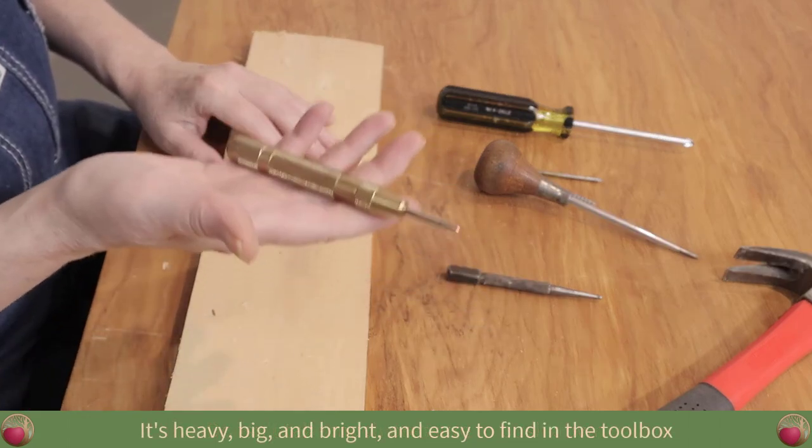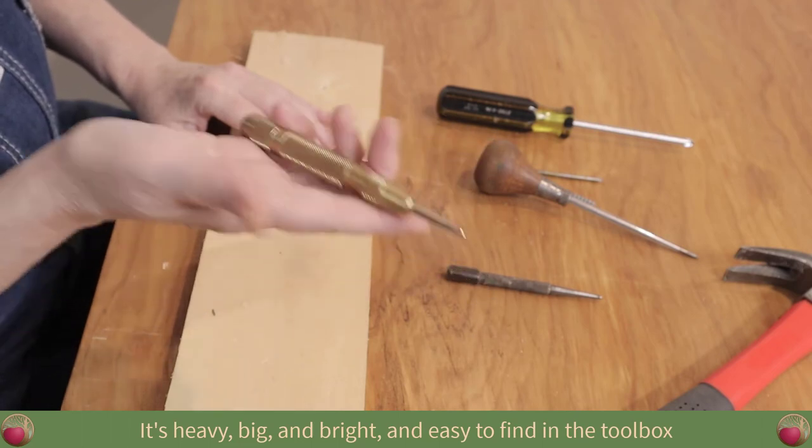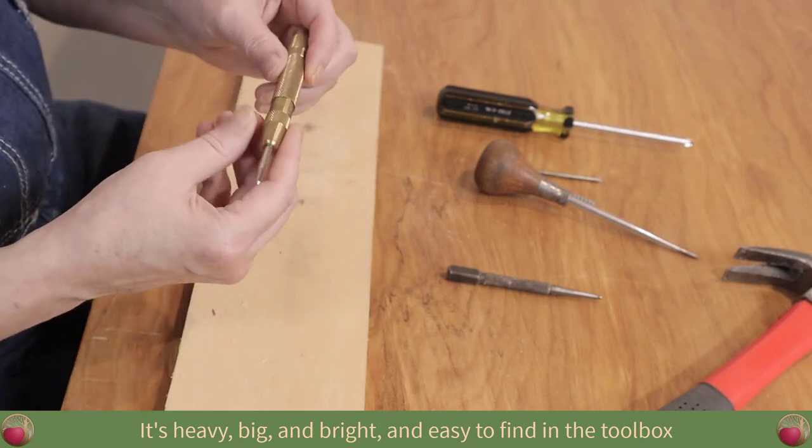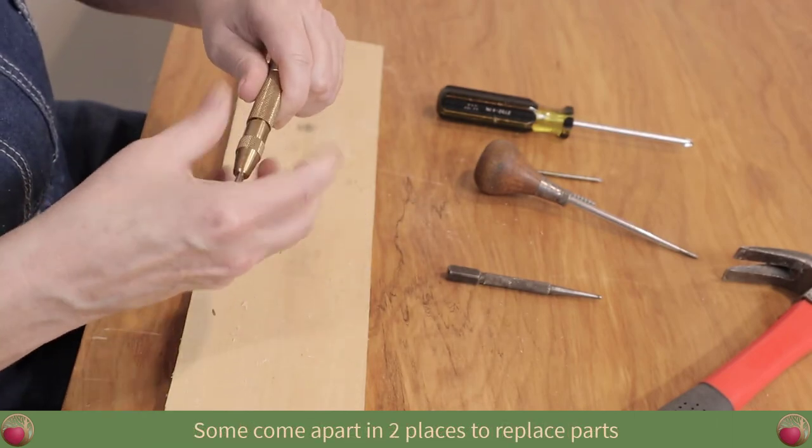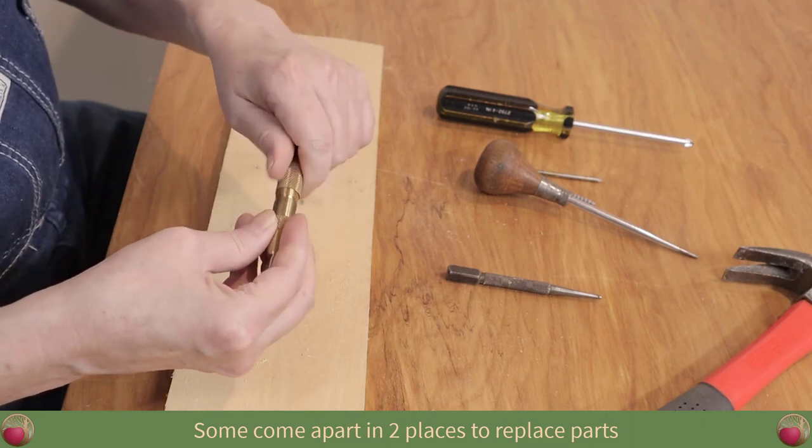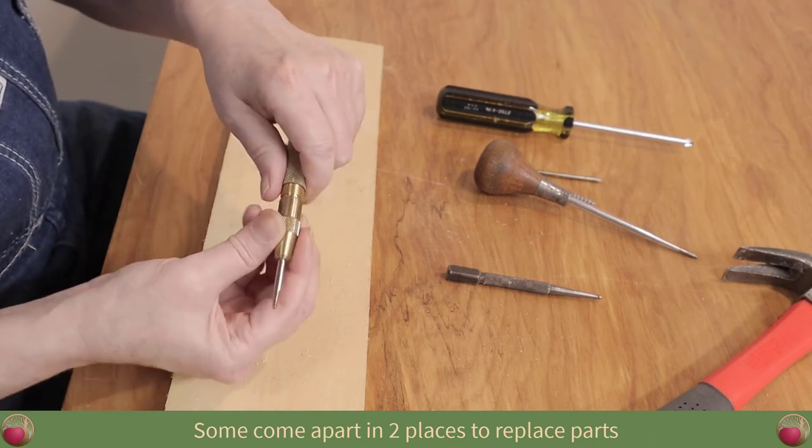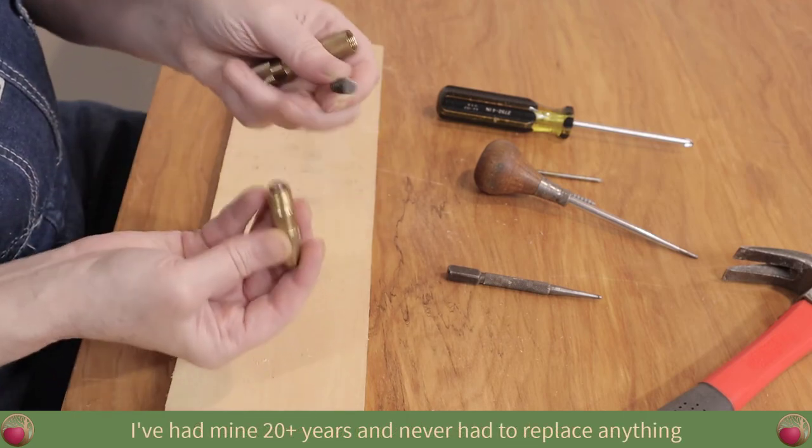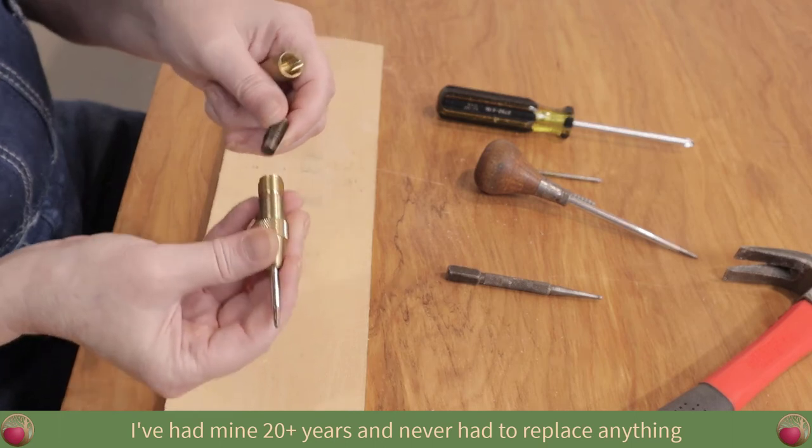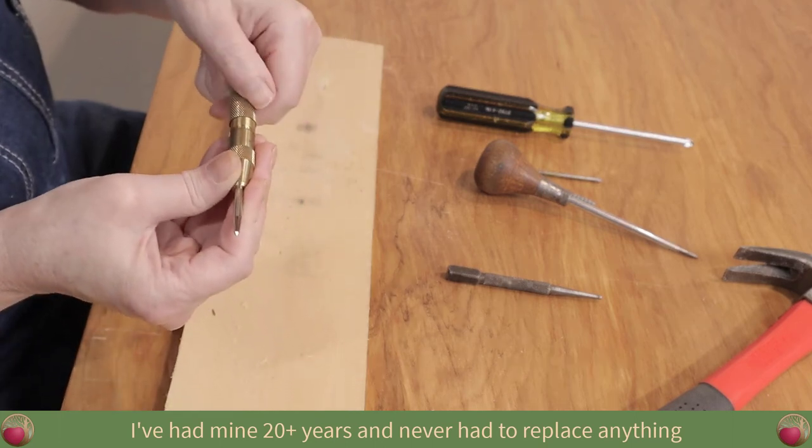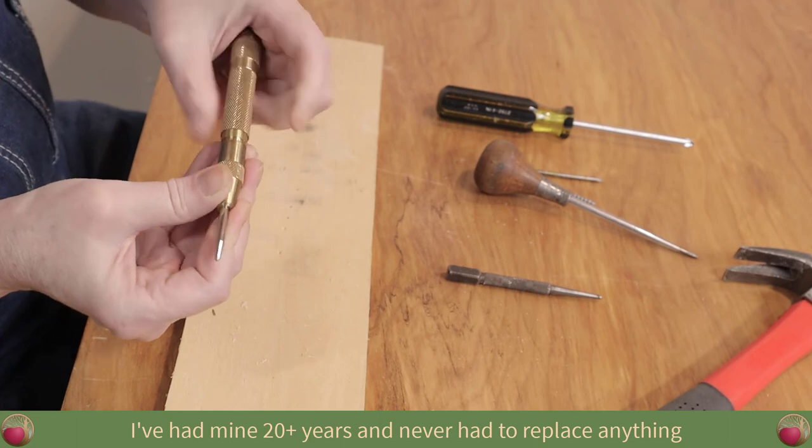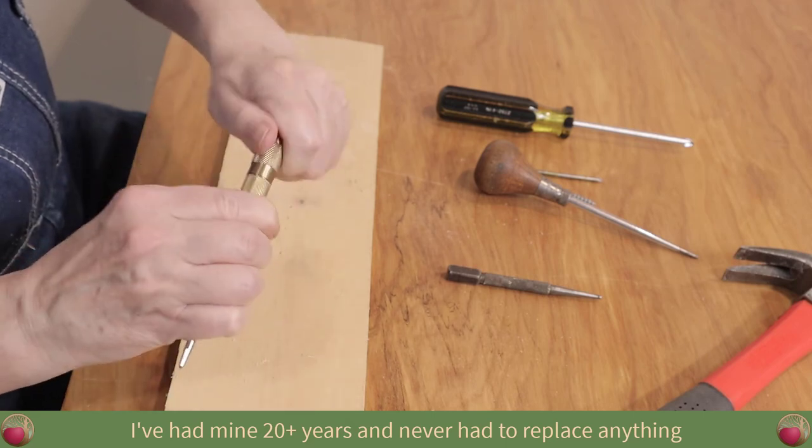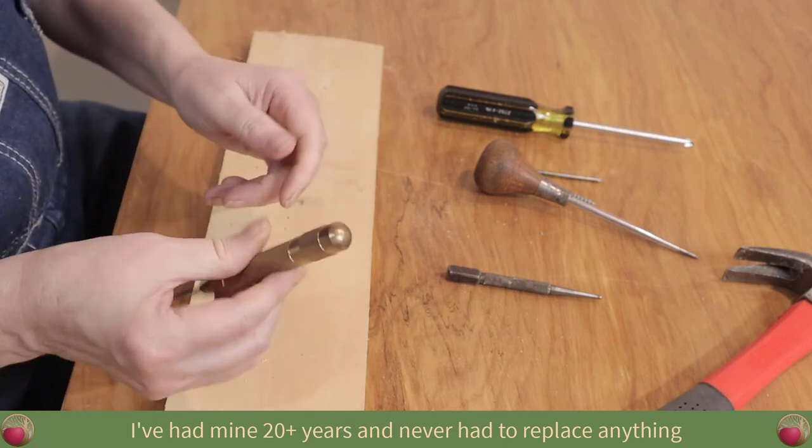The other thing, it's got some weight to it. It's big, it's bright, and it's pretty easy to find in your toolbox too. So I love this. I never have any trouble finding it. Now some of these come apart in a couple of places so that you could, if you wanted to, if the tip ever dulls out, if you use it enough, you can actually replace the tip. If you have something like this, I probably had this, oh, 20 or 30 years. And I haven't dulled the tip out on it yet. So have fun trying to find a replacement, right? Cause this is kind of a no name brand kind of a thing. So you'll probably just get another one if you ever do that.